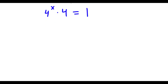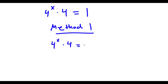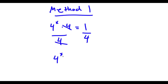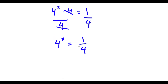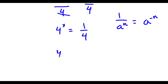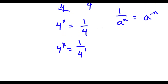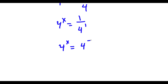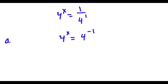Now from here, I actually have two methods to solve this problem. For method number 1, start with 4 to the power of x times 4 is equal to 1. Now I'm going to divide both sides by 4. So then these two cancel out, and I get 4 to the power of x is equal to 1 over 4. Now if I have something in the form 1 over a to the power of n, this is the same thing as a to the power of negative n. So in this case, 1 over 4 can be rewritten as 1 over 4 to the power of 1, and now this is the same thing as 4 to the power of negative 1. So since a to the power of m equals a to the power of n means m equals n, we have 4 to the power of x equals 4 to the power of negative 1, meaning x is equal to negative 1.